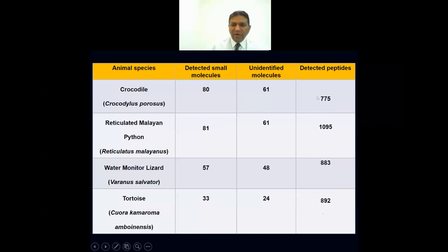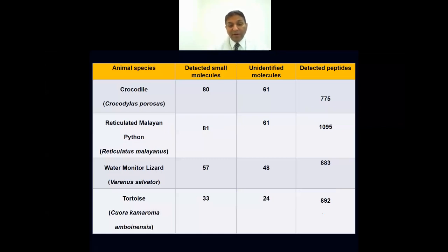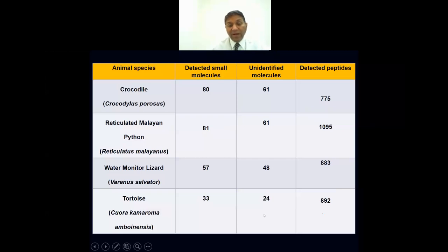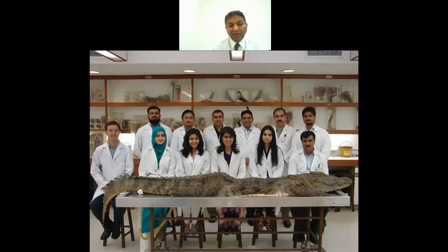We isolated hundreds of molecules from crocodiles and are in the process of identifying which molecules can be useful in killing viruses, bacteria, or parasites. We're also working on python, water monitor lizards — very large lizards found in Indonesia and Malaysia that feed in polluted environments — and tortoises, which have a lifespan of nearly 200 years. All of these species feed in unhygienic conditions and yet thrive, begging the question of how they survive such a long life without getting infected.